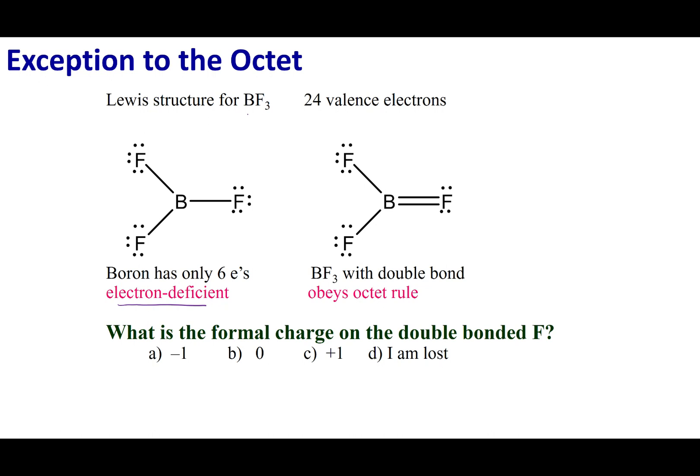Let's take a look at this compound BF3. It has 24 valence electrons that you have to distribute among these four atoms. There are two ways we can envision a Lewis dot structure.